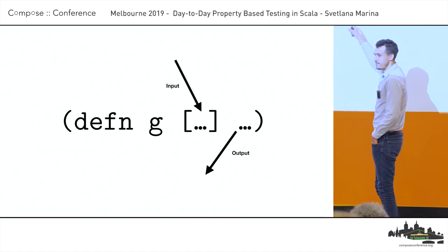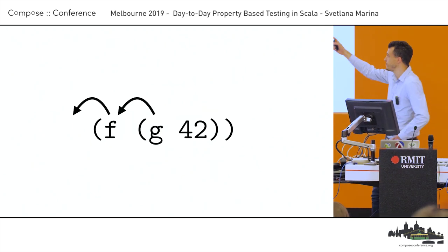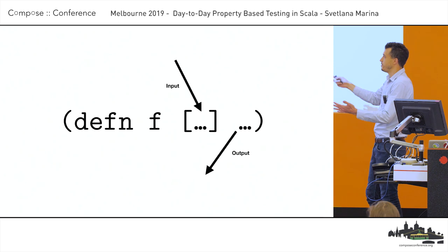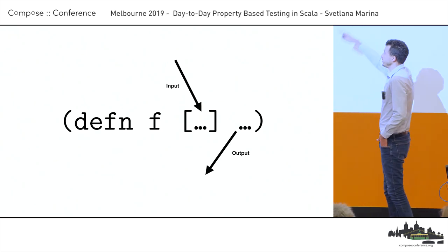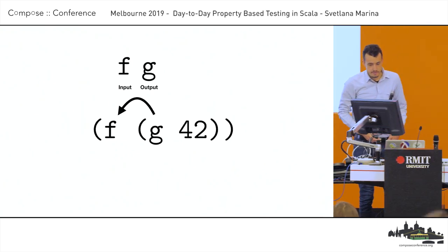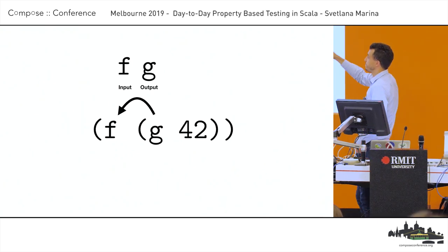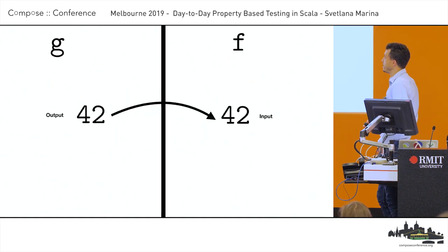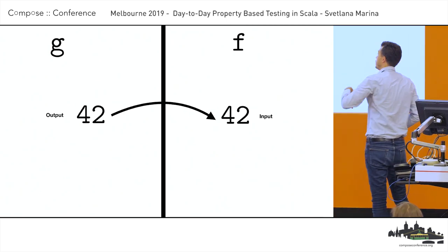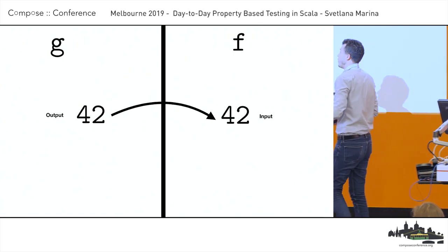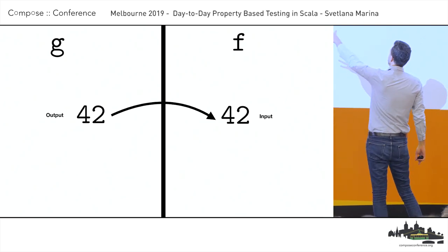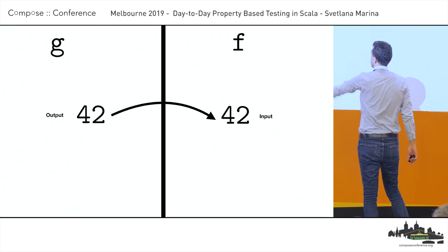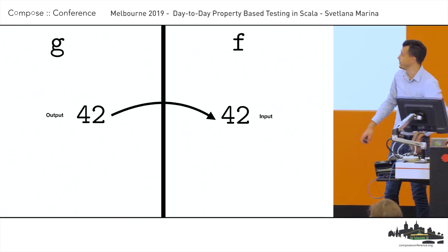The way to think about it: an input to g moves us into the definition of g, and an output from g moves us away from it. Outputs aren't only return values. From the perspective of f, inputs move us into f's execution, and outputs make us leave f's body. Visualizing g's definition on the left and f on the right, we can think of g giving f the ability to execute — delegating the thread of execution by sending it a message.